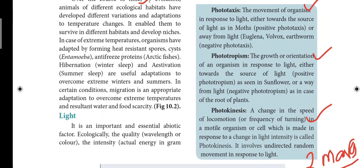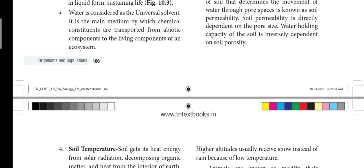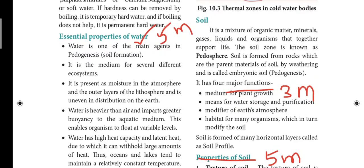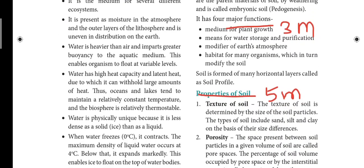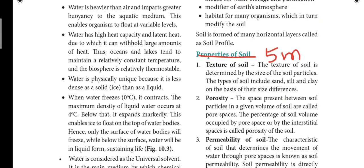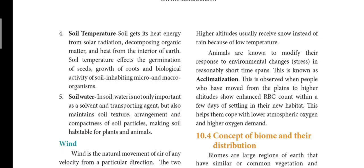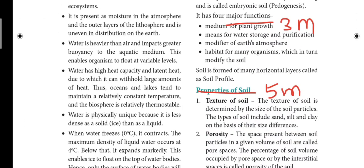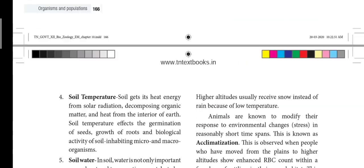Next, there's a box on phototaxis and photokinesis — a two-mark question. On page 166, what are the essential properties of water — a five-mark question. Also, functions of soil: medium for plant growth, medium for water storage and purification. Properties of soil include texture, porosity, permeability, soil temperature, and soil water. Properties of soil is a five-mark question while functions is about three to four points.